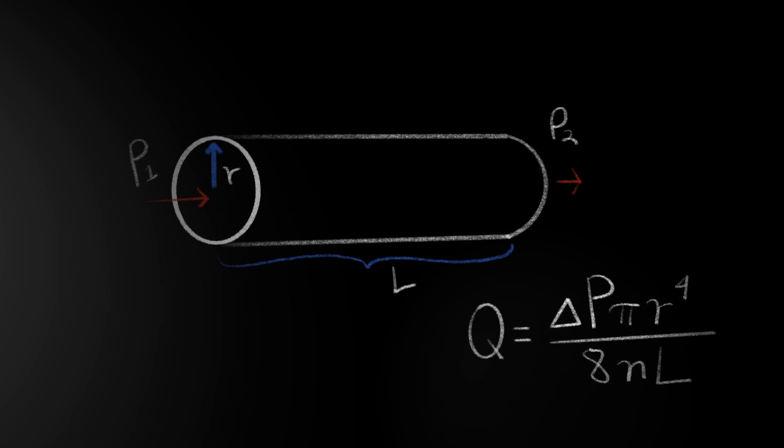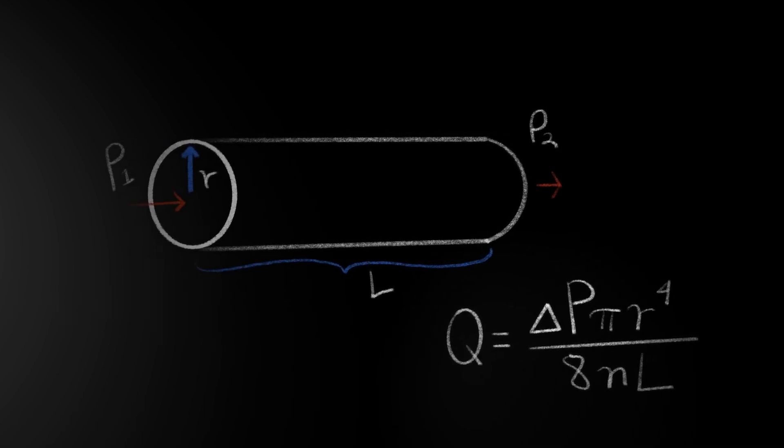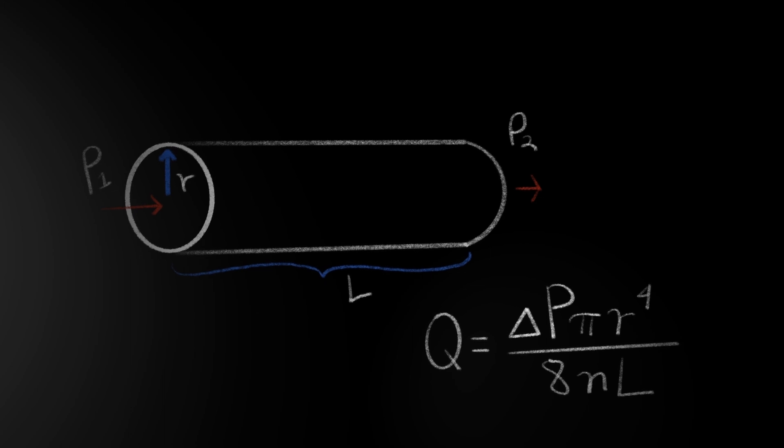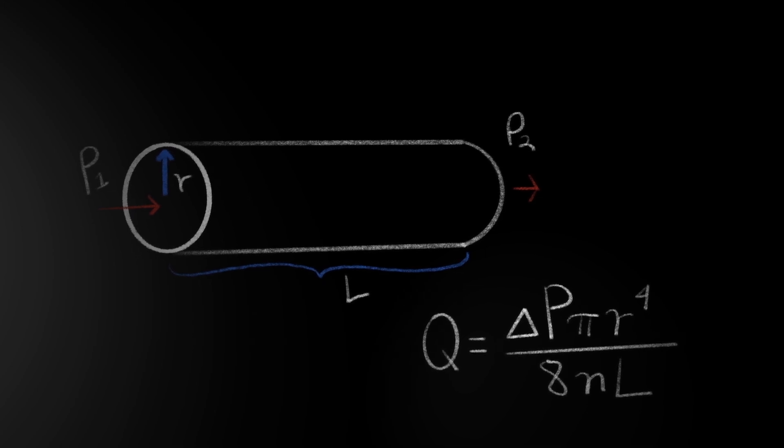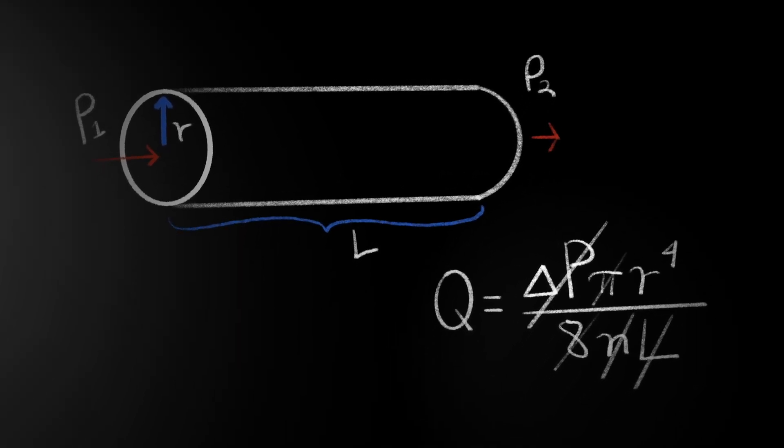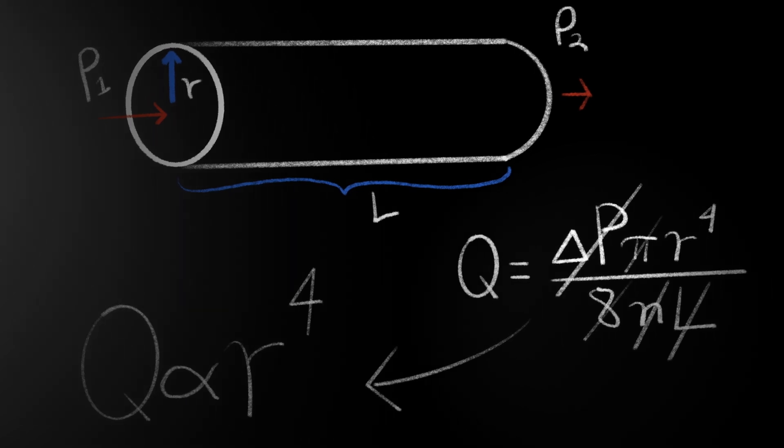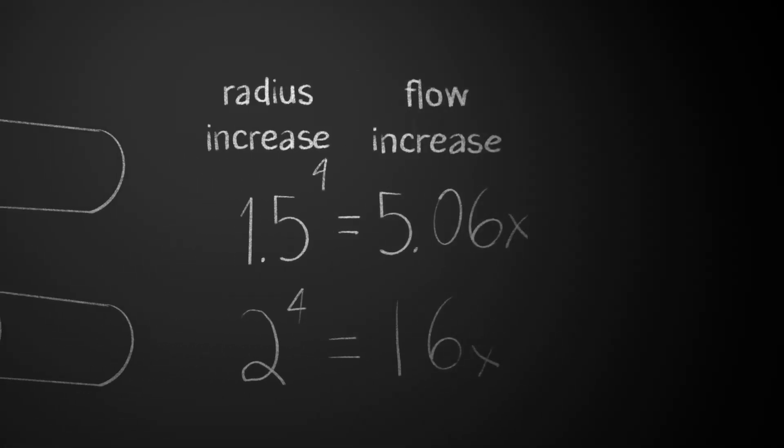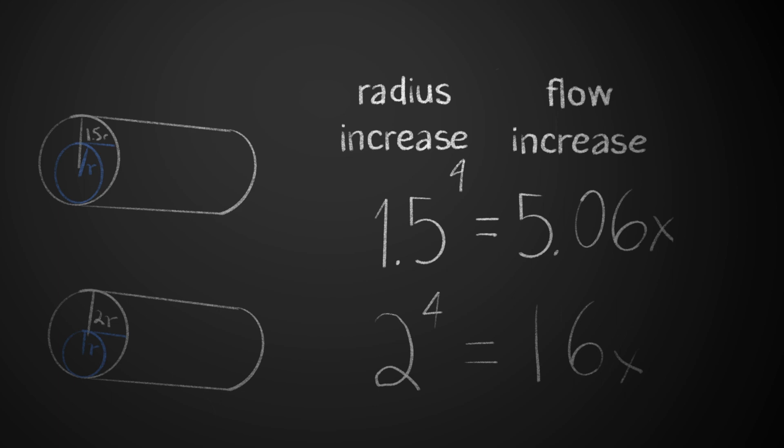So since catheters are all the same length and the fluid is the same viscosity, those are constants. Those variables will be the same regardless of the catheter used. So essentially what's important is that the flow is proportional to the radius of the catheter to the fourth power. Increasing the radius of the catheter by 50% increases the flow through the tube by an astounding five times, 500%. If you increase the radius by double, the flow increases 16 times.